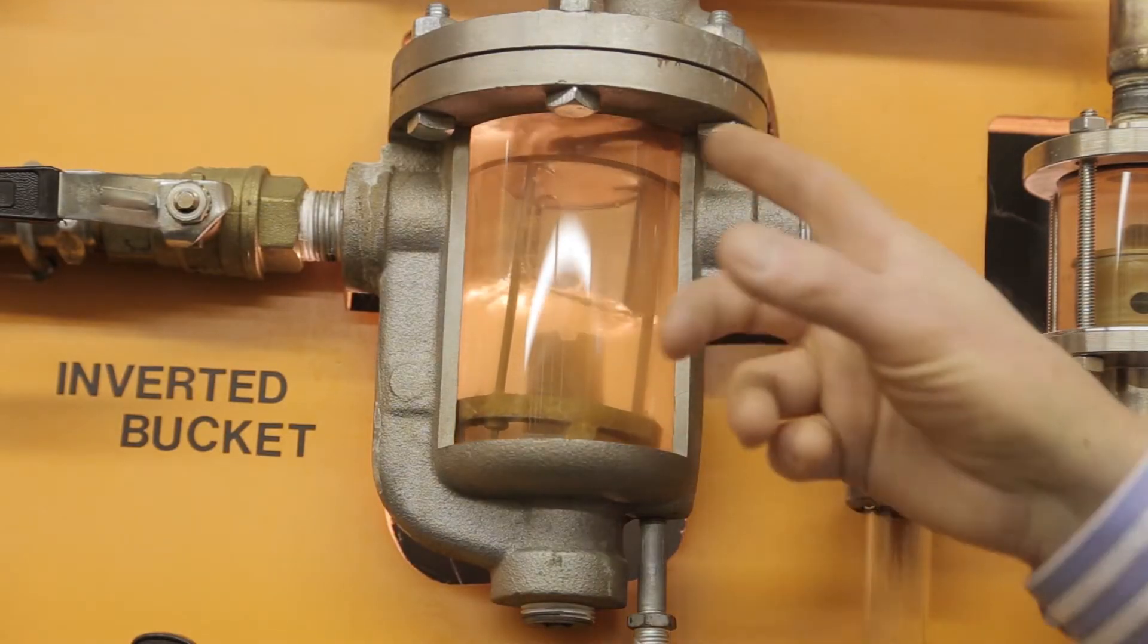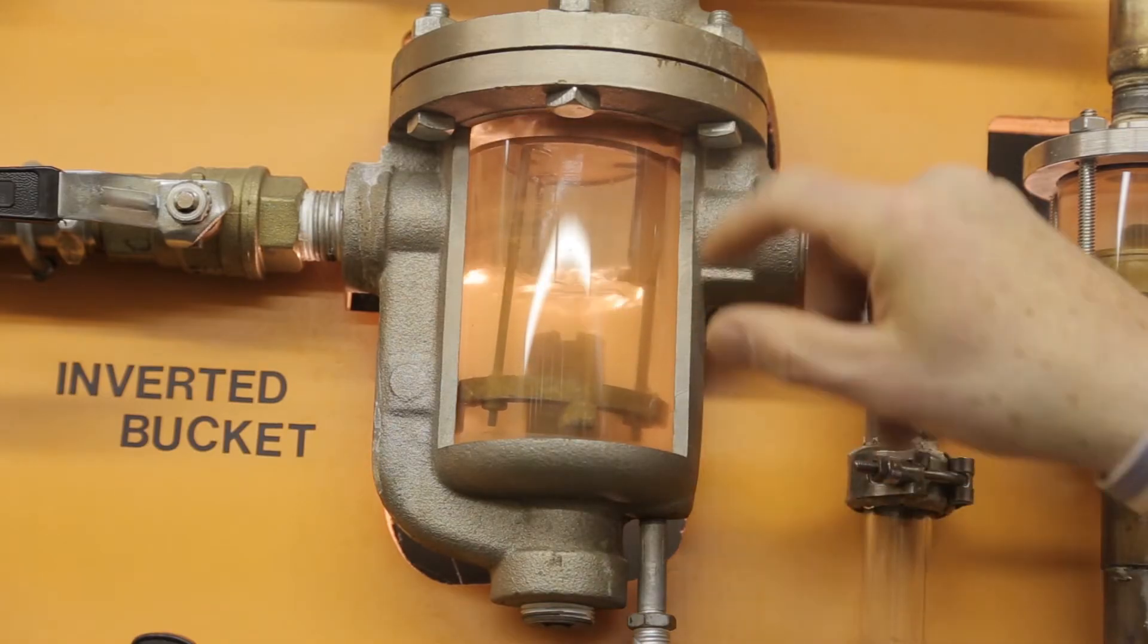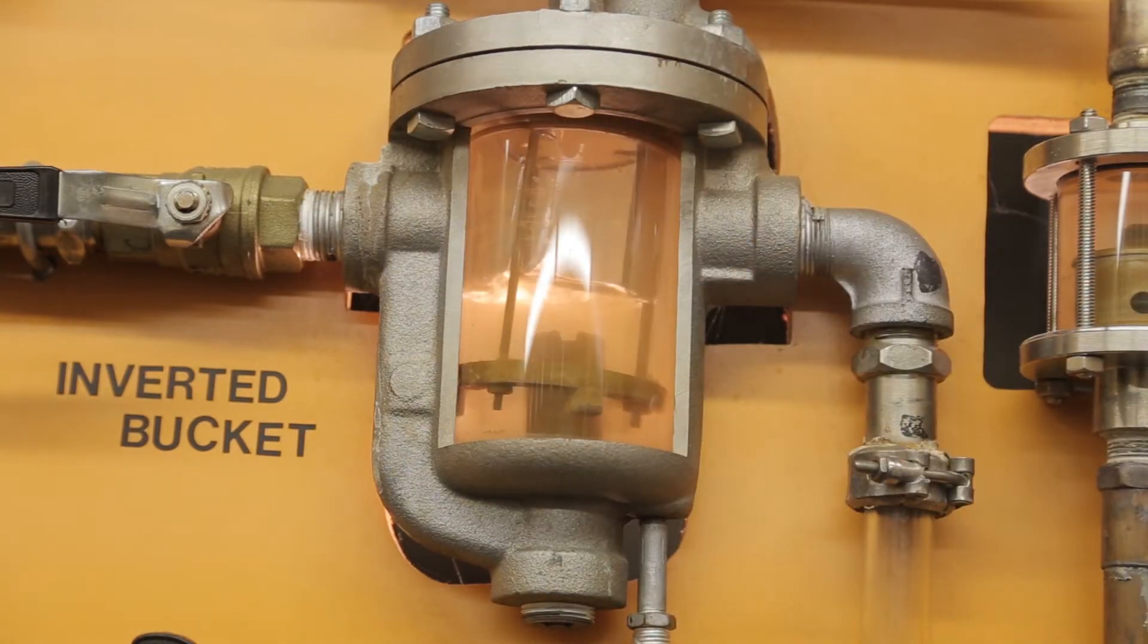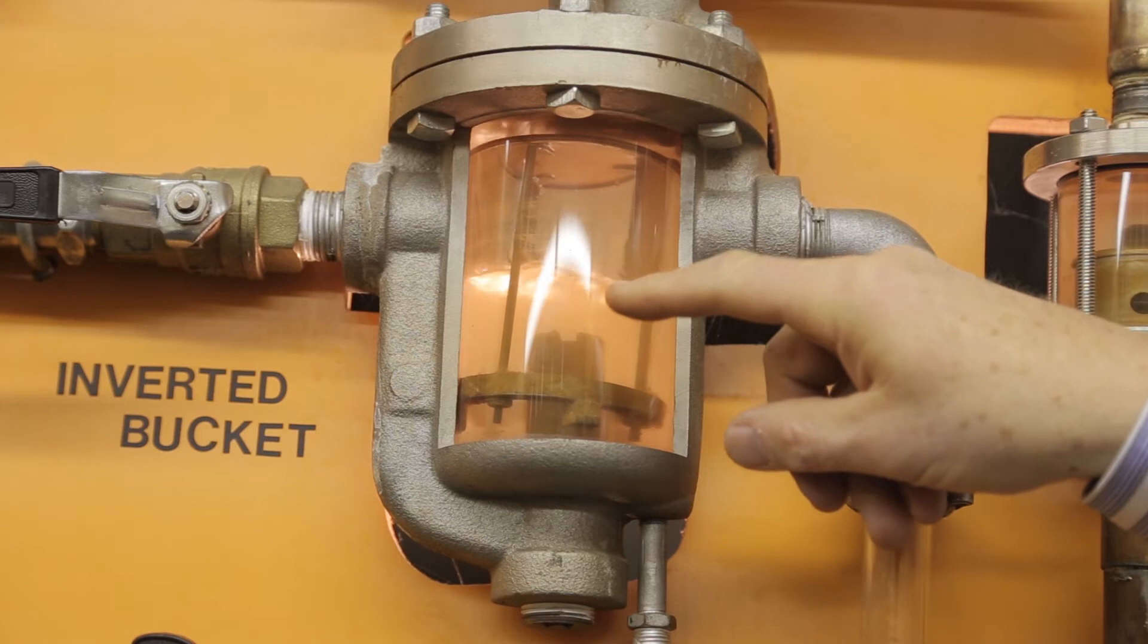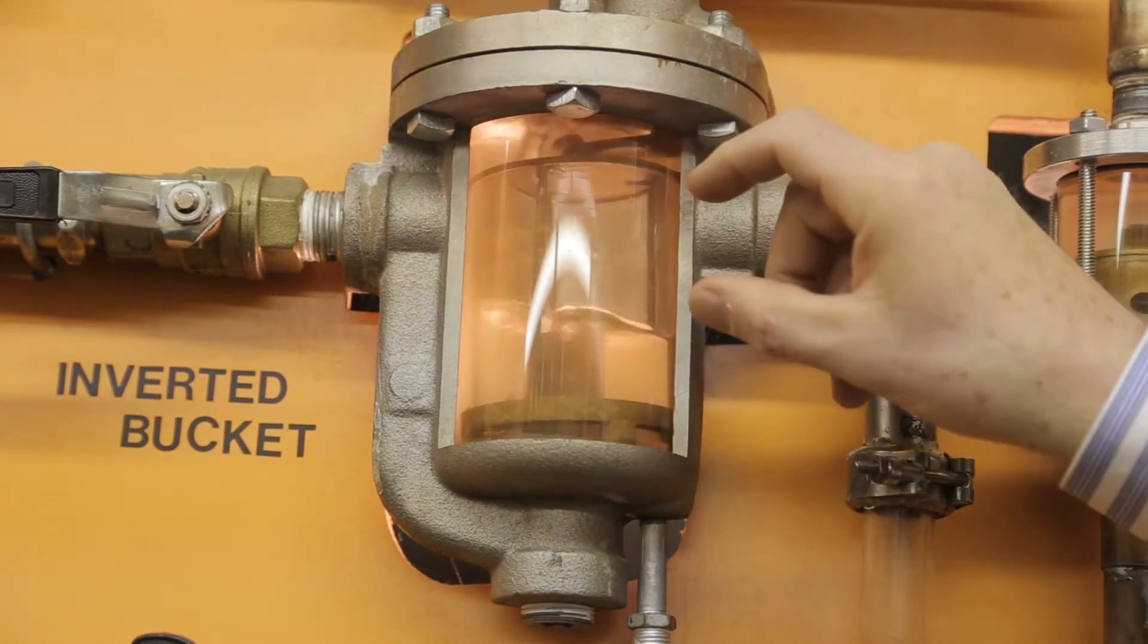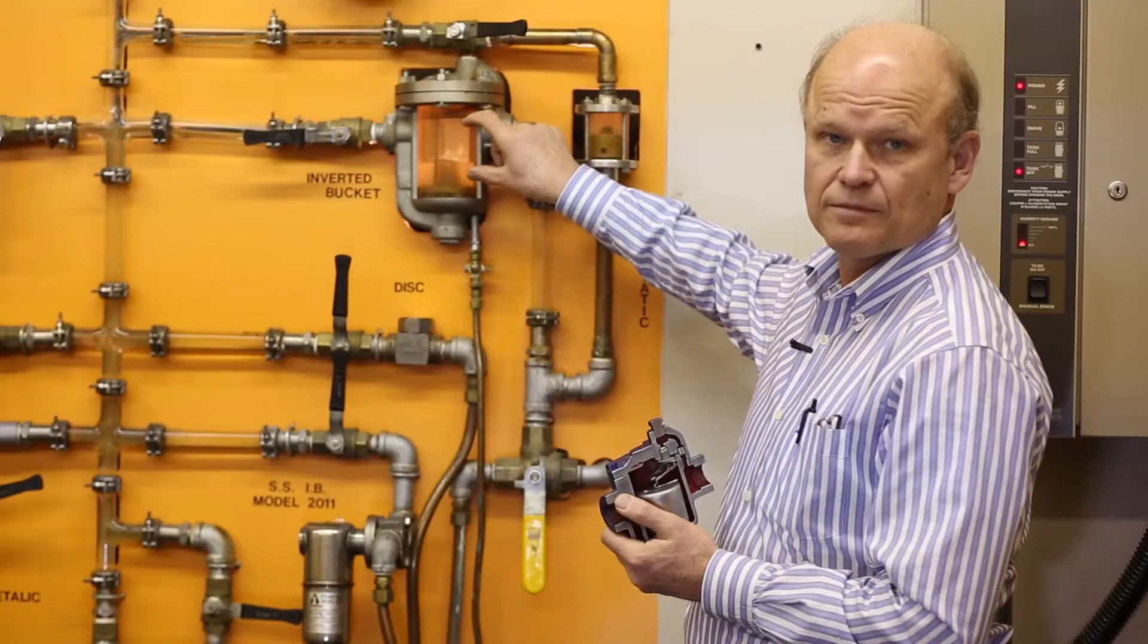It has steam underneath the bucket. The entire trap body is completely filled with condensate, and as the trap fills up with condensate and becomes about one-third steam in the bucket, it loses its buoyancy. The bucket falls, condensate flows out around the outside and down until it gets to be about two-thirds full of steam and the bucket refloats itself.